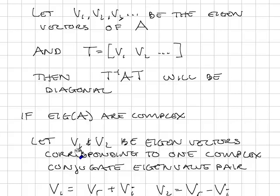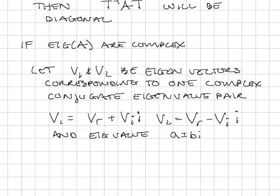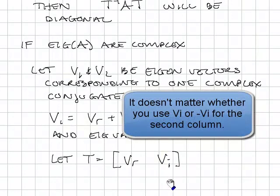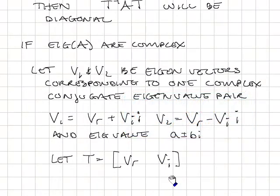For a complex conjugate eigenvalue pair, we'll have eigenvectors V1 and V2. They will be complex: V1 has the form V_real plus V_imaginary times i, and V2 is V_real minus V_imaginary times i — complex conjugate pairs. If the corresponding eigenvalue has the form A plus or minus Bi, then we let the T matrix have the form where one column is VR, the real part, and another column is VI, the imaginary part.